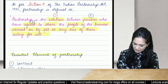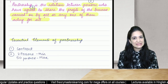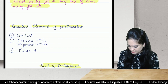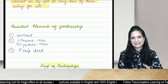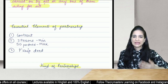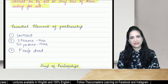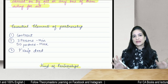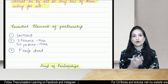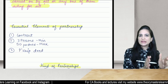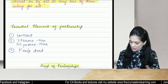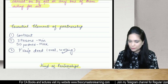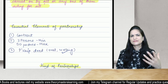The third element is that there must be a partnership deed. This deed lists the rights and duties of the partners, the place of business, capital contribution, profit sharing ratio, and everything related to the partnership business. This deed is referred to in case of disputes. It can be oral or in writing, but writing is always preferred because it is proof and evidence in the court of law.